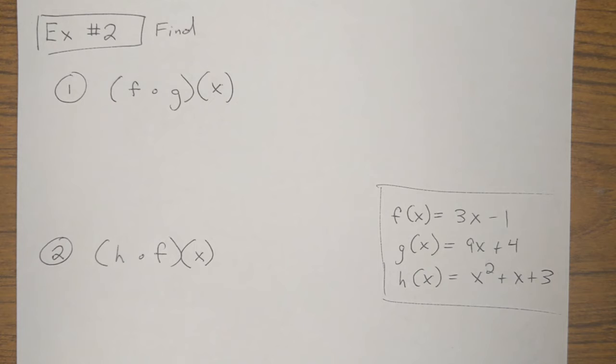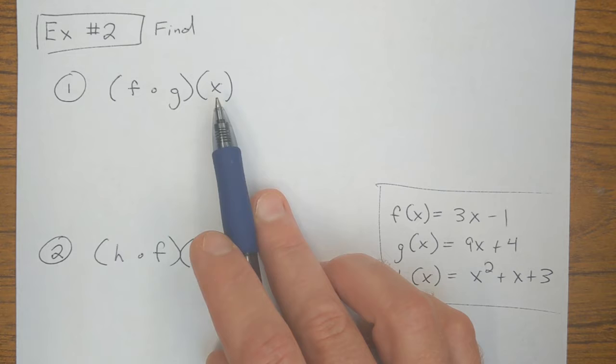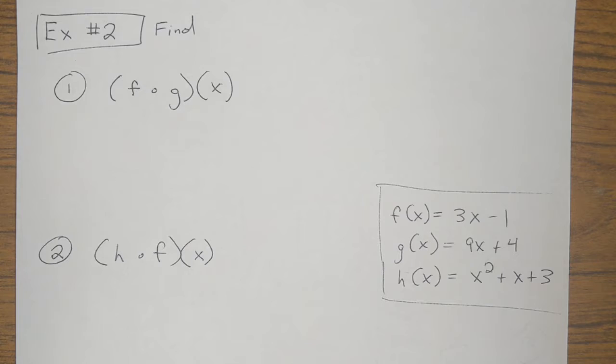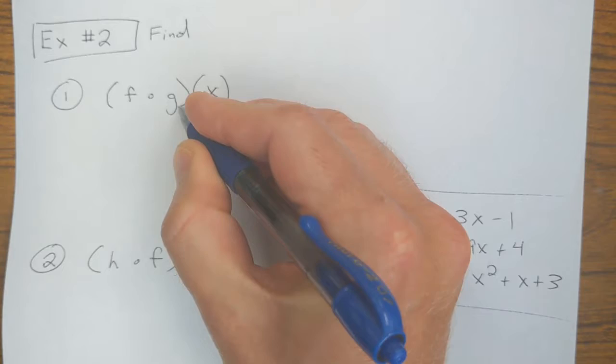So in the last half of this lesson, you probably know what's coming here. We're going to stop doing numerical inputs and let's do some compositions that have variable inputs. So this is F circle G of X. Let's see what we find here. What we would have to do is start by inputting this variable X into the function G.